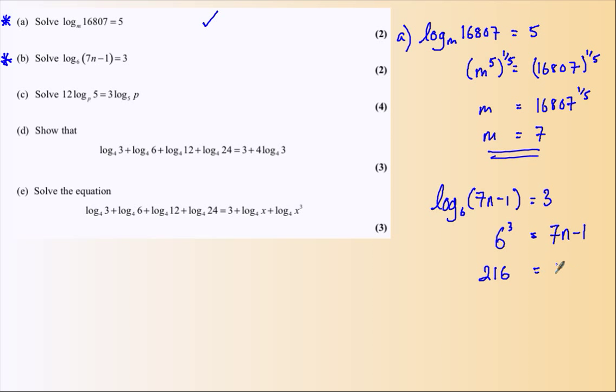6 to the power of 3 is 216, I believe. Therefore n equals 217 over 7, which I think looks like 31. And that's B done.